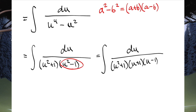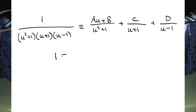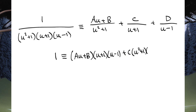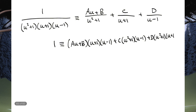We are going to use partial fractions decomposition to sort this out. So here I have set up the partial fraction decomposition. We're going to multiply the entire right-hand side by the denominator. That gives us: 1 is equivalent to (Au+B)(u+1)(u-1) plus C(u²+1)(u-1) plus D(u²+1)(u+1). We're going to set different values of u to find the constants A, B, C, and D.